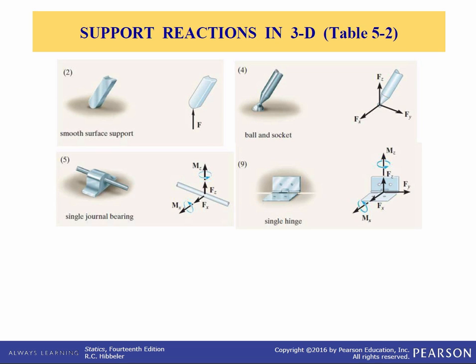The first step in solving three-dimensional equilibrium problems, just like in the case of 2D, is to draw a free body diagram. Before we can do this, we need to discuss different types of reactions that can occur at three-dimensional supports. A force is developed by a support that restricts the translation of its attached member, and a couple moment is developed when rotation of the attached member is prevented.